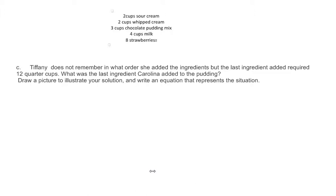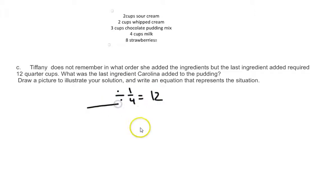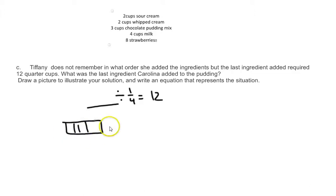In this problem, Tiffany doesn't know what order she added the ingredients, but the last ingredient added required twelve quarter cups. So what was the last ingredient Tiffany added to her cake mix? We need to draw a picture to illustrate this. The number sentence is set up like this: what number divided by one quarter equals twelve? We need to figure out what that number is. If this was one cup, it would take four quarter cups to make one cup.